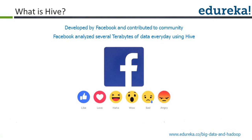Hive was developed by Facebook. After that, Facebook submitted Hive to Apache as a top-level project. Similarly, MapReduce was developed by Yahoo, Spark was developed by Berkeley University, and Storm was developed by Twitter. Each company developed one of those services, then turned them over to Apache, which manages, maintains, and monitors them. Hive was initially developed by Facebook but had many contributors.